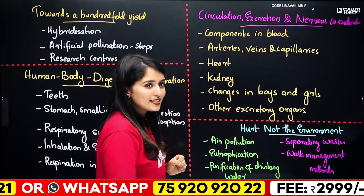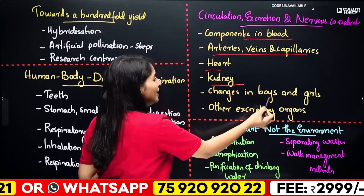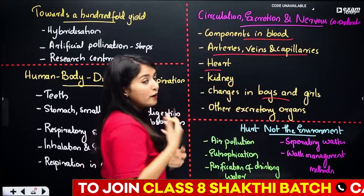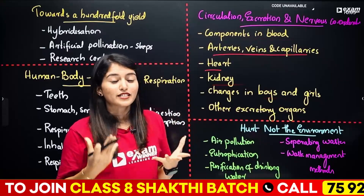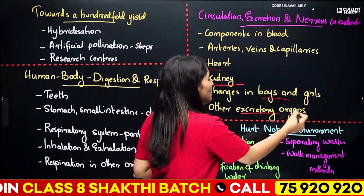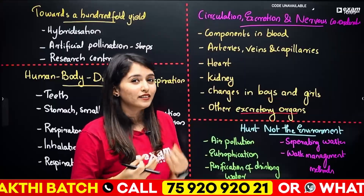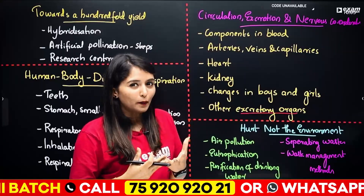The blood-related components are: arteries, veins, capillaries, heart, kidney. Adolescent changes — boys and girls and changes. Other excretory organs: lungs and liver.